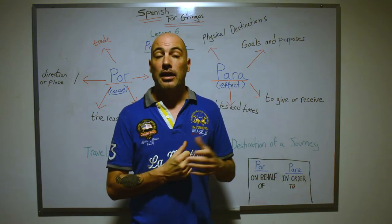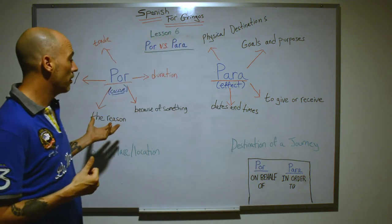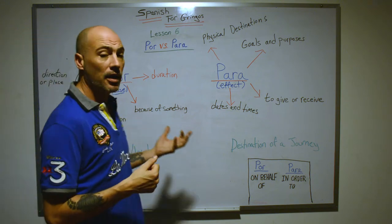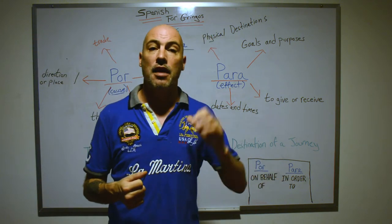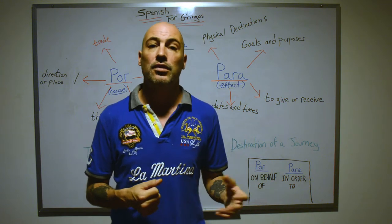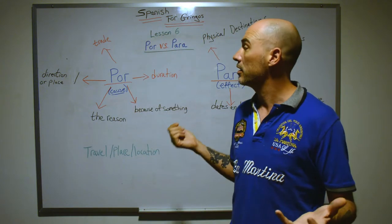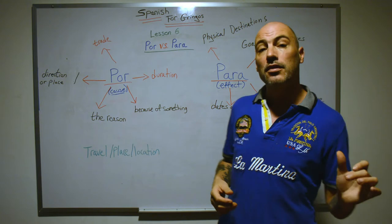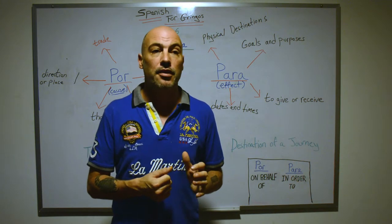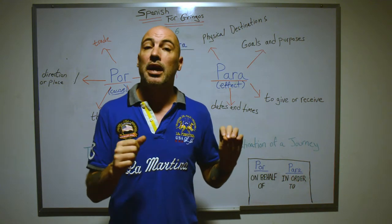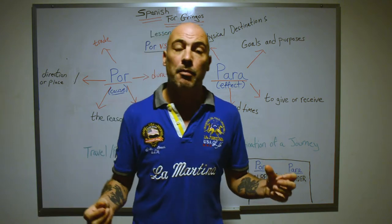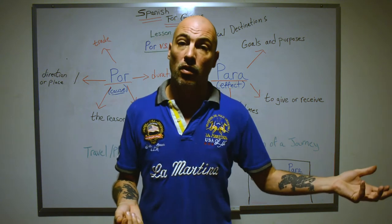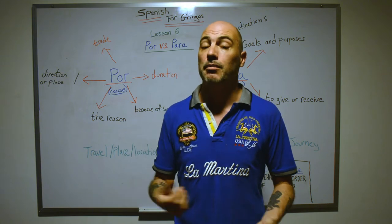When you look at the board you're going to see a lot — para can have five or six different usages and rules, and por probably has six or seven. I don't even have all of them on the board; I'm just giving you some examples. This video will break it down, explain how they're used, and then sum it up at the end with a little cheat sheet of when por is more likely being used and when para is more likely being used.